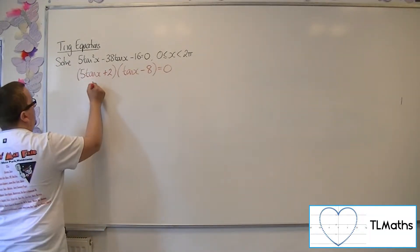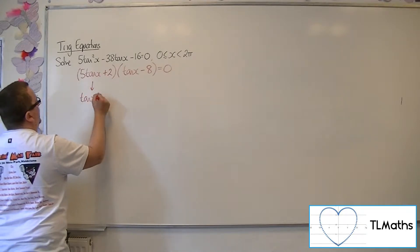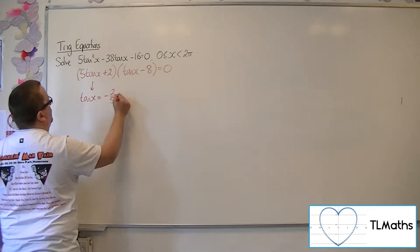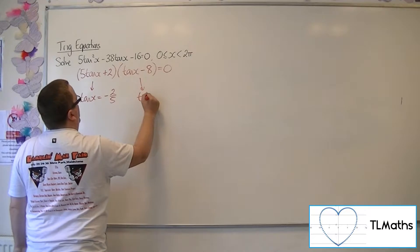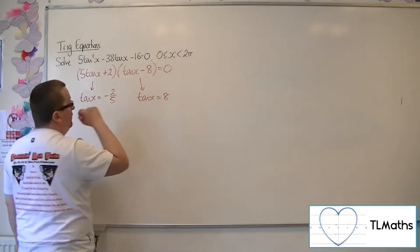So either tan x is equal to minus 2 fifths from that bracket or tan x is equal to 8 from that bracket.